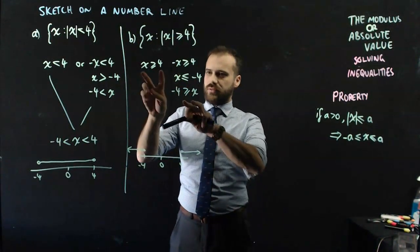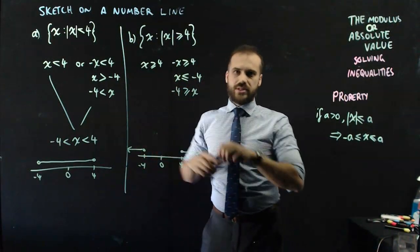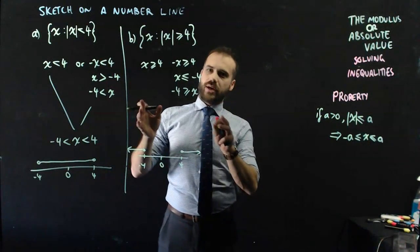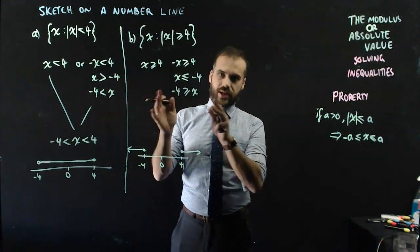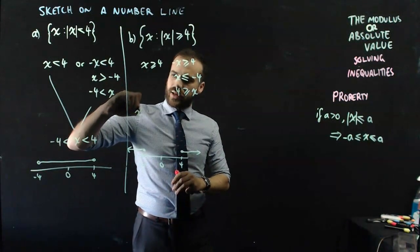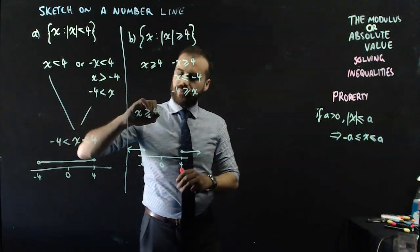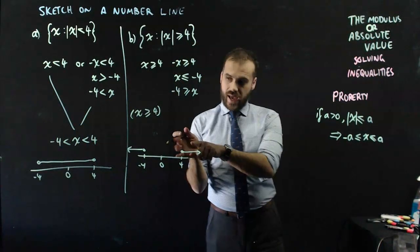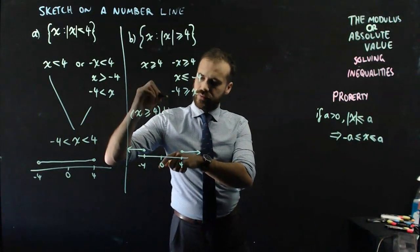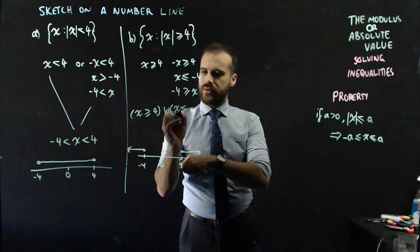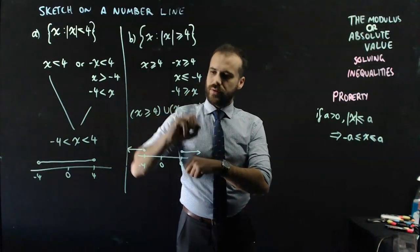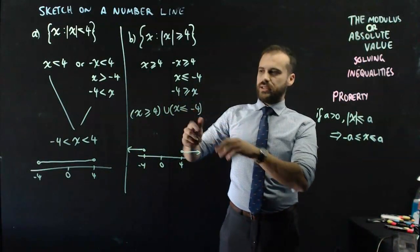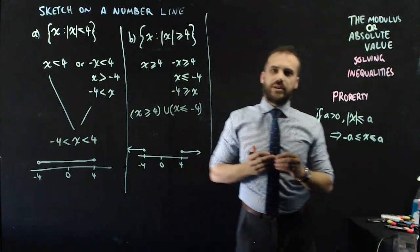And so we get this kind of two-tiered approach where we've got to consider both. Now just for completeness, you might want to come up with a nice way to explain that in a single line. We can say that x is greater than 4, union, x is less than or equal to negative 4. So there's a neat little way to talk about something like that.